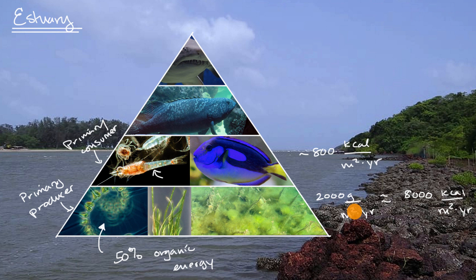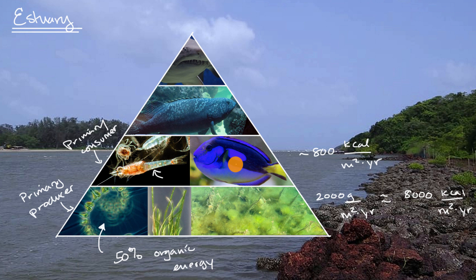You might be asking where all the other calories are going. Even in this first layer, we said this is net primary production — the gross would be even higher. These photosynthesizers had to use energy for things like respiration. And even on a net basis, so much is lost going to the next layer because these animals have to use energy to live — for respiration, movement, growth. A lot of this energy also becomes detritus, biomass that is just not consumable by the next layer, and energy at every level can be lost to heat.